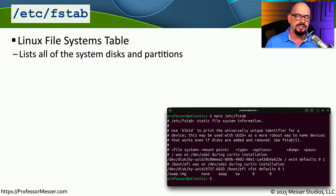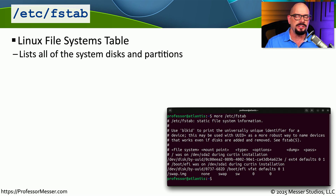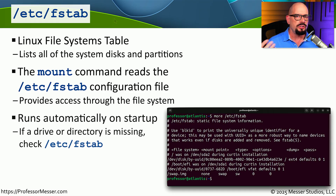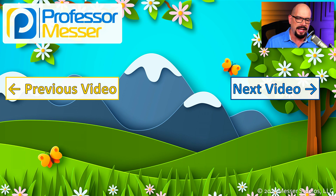Storage devices connected to your Linux device have partitions and file systems, so we need to tell the Linux operating system where those partitions are and what file system type is on them. We do this using a file in the /etc directory called fstab, for file system table. When your system starts up, it references this file system table to mount all the drives used by Linux. If a particular drive is missing after starting, it may not be listed in your fstab file.